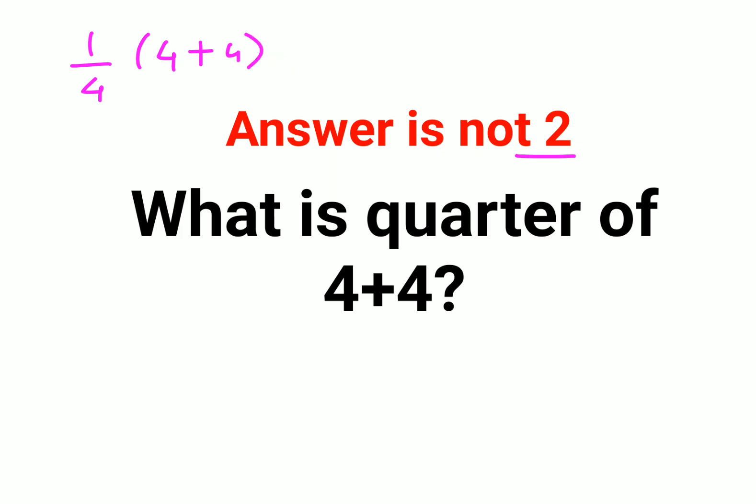They thought that everything is under the bracket. If that was the case, the bracket would have been given in this way. But since the bracket was not given, the actual question is supposed to be written in this way. Quarter of means multiplication: 1/4 times 4 plus 4. So this gets cancelled and you are just left with 1 plus 4.